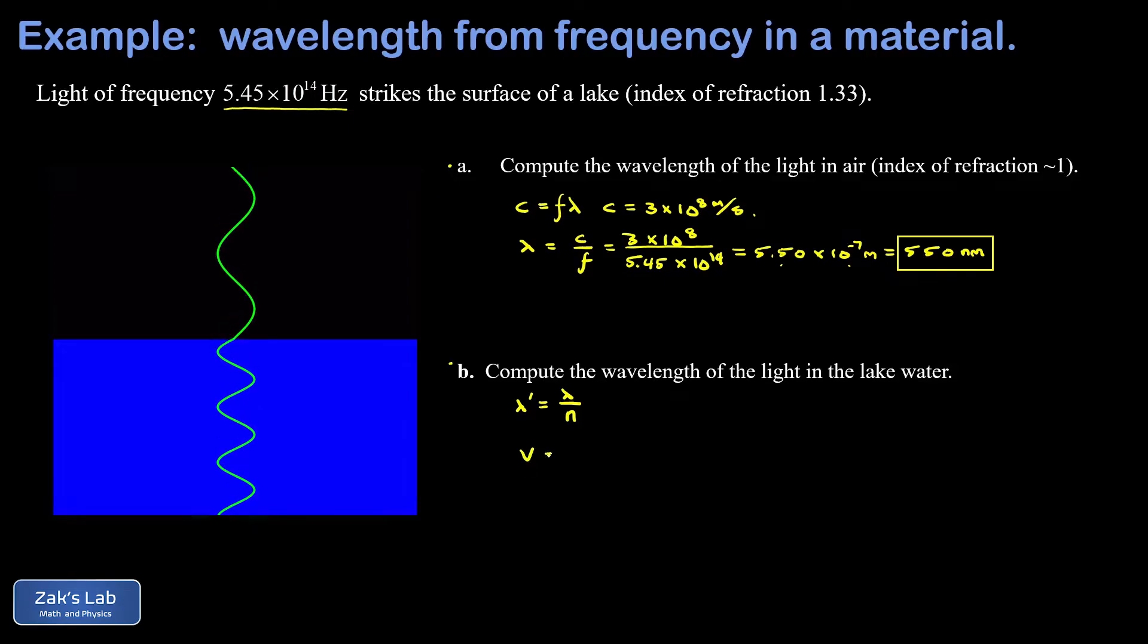The speed of the wave within the medium is still given by v equals f lambda. One important point in the animation is that the frequency of the light wave is the same above and below the interface at the surface of the water. If the frequency wasn't the same, you would end up with a discontinuity in the electric field. So the frequency is always the same as a light wave transitions from medium to medium.